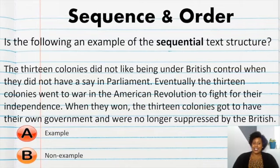Now, let's practice. Is the following an example of the sequential text structure? The 13 colonies did not like being under British control when they did not have a say in Parliament. Eventually, the 13 colonies went to war in the American Revolution to fight for their independence. When they won, the 13 colonies got to have their own government and were no longer suppressed by the British. What do you think? Is that an example or non-example? Well, if you said a non-example, you were right.